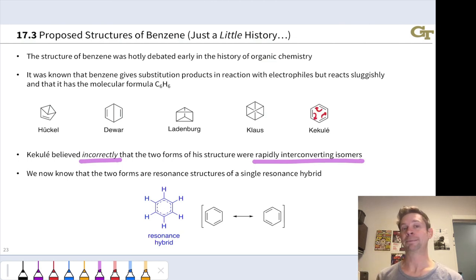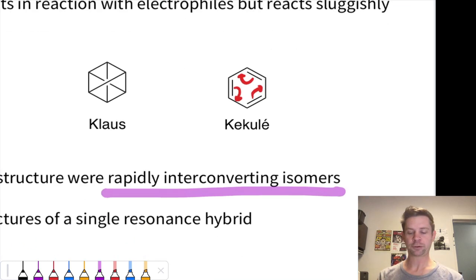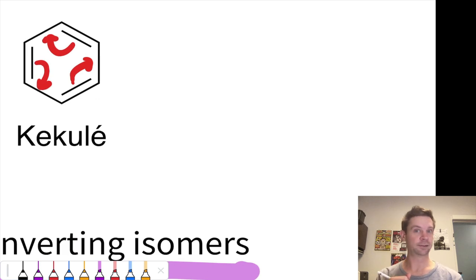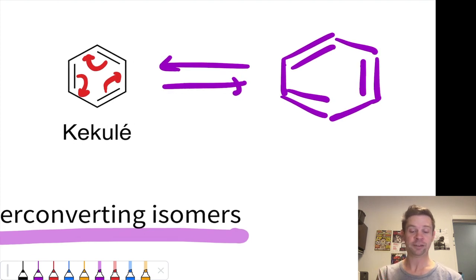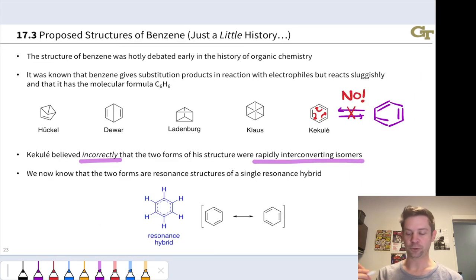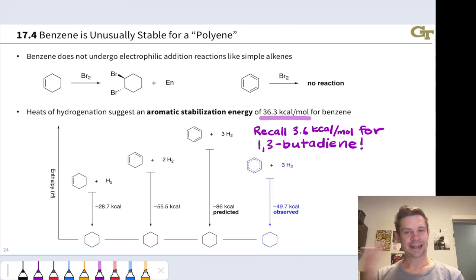He believed those constitutional isomers were rapidly interconverted. We could imagine shifting the double bonds around through resonance electron flow. Kekulé believed this was actually an equilibrium, that there was actual chemical change going on. We now know that this is not the case, that these two ways of drawing benzene are resonance forms. The true structure of benzene is a hybrid of these two resonance forms, a 50-50 hybrid of these two ways of drawing the benzene Lewis structure.